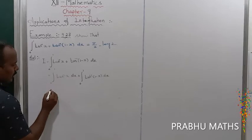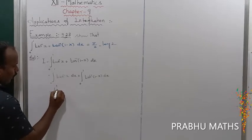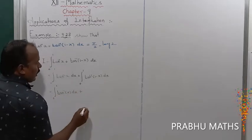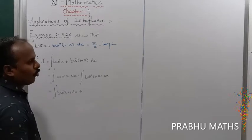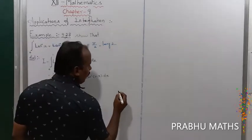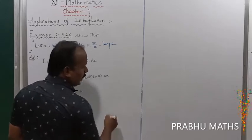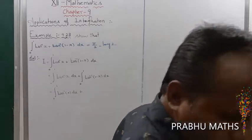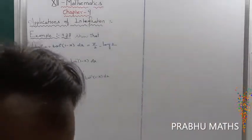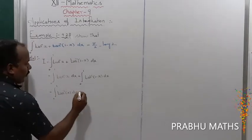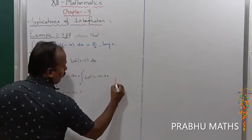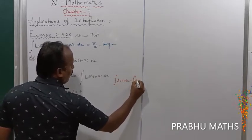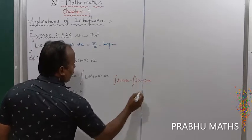The first value, there are no changes: integral half 0 to 1 of tan inverse of x into dx. For the second term, by using the formula integral a to b of f(x) dx is equal to integral a to b of f(a minus x) dx.